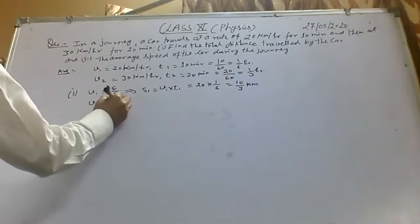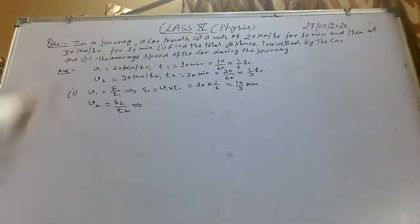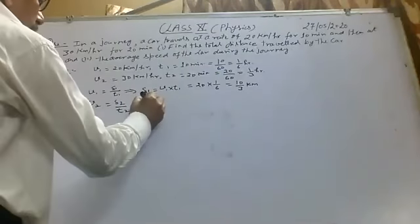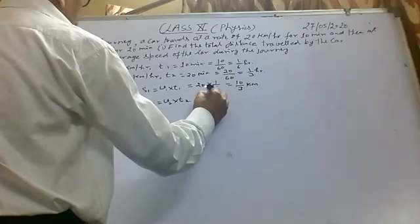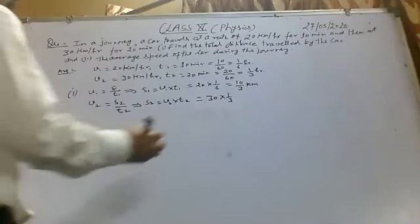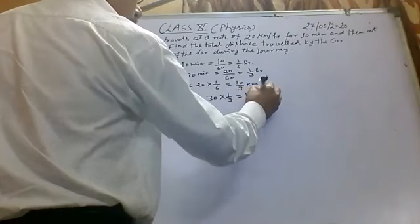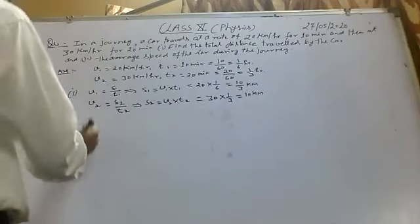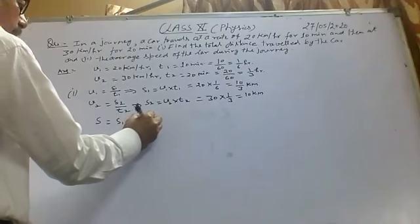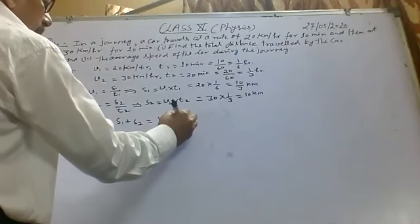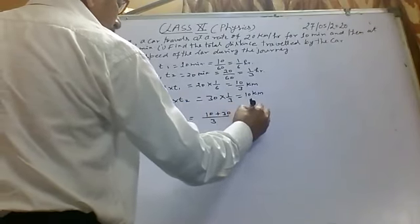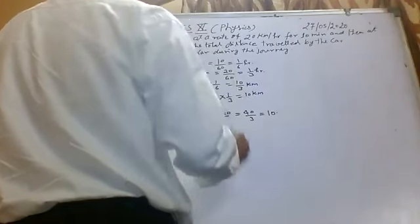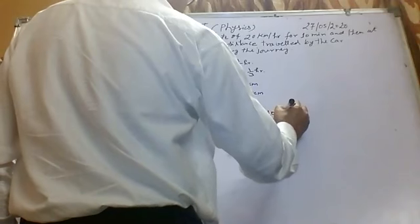Similarly, V2 equals S2 over T2, where S2 is the distance traveled in the next 20 minutes. So S2 equals V2 into T2, which equals 30 into 1 by 3, so S2 equals 10 km. That means total distance S equals S1 plus S2, which is 10 by 3 plus 10. Taking LCM as 3, that gives 10 plus 30 over 3 equals 40 by 3, approximately 13.3 km.